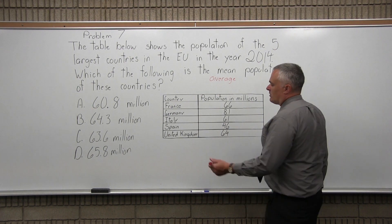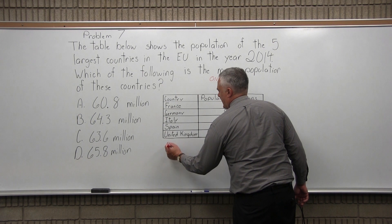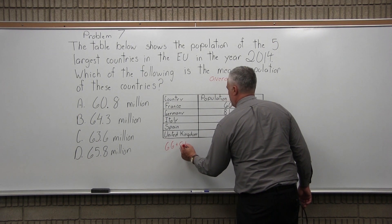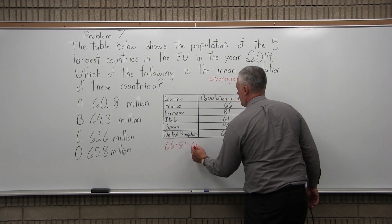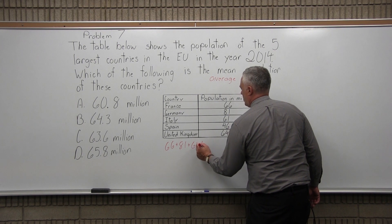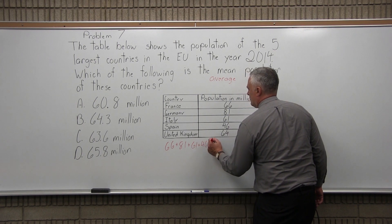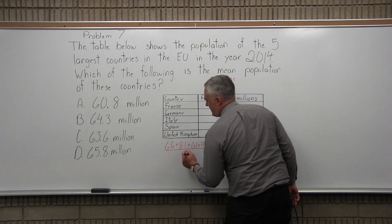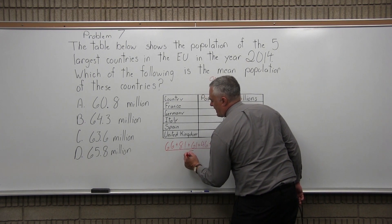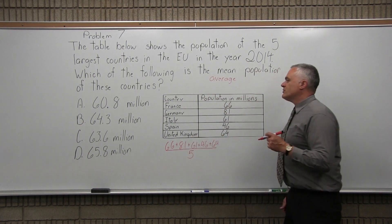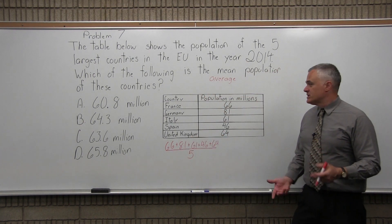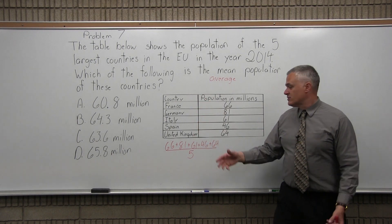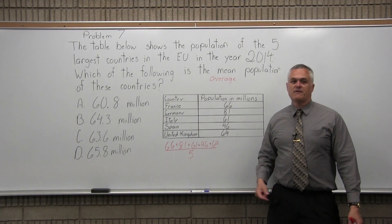What we are going to do is add 66 plus 81 plus 61 plus 46 plus 64, and see what we get as a result. Then we will divide by the number of countries in the chart, which is five — one, two, three, four, five.